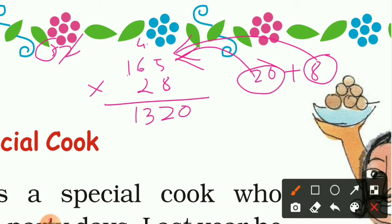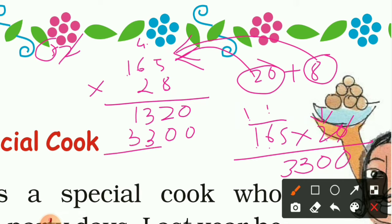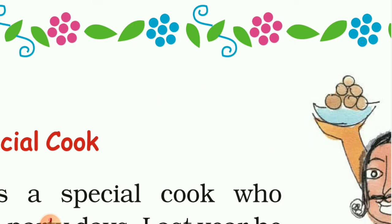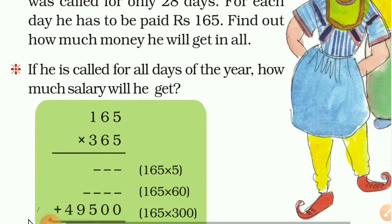Now multiply 165 by 20. Put a 0 at the end, then multiply all digits by 2. 2 × 5 = 10, carry 1; 2 × 6 = 12 plus 1 = 13, write 3 carry 1; 2 × 1 = 2 plus 1 = 3. So we get 3300. Now add: 0 + 0 = 0, 2 + 0 = 2, 3 + 3 = 6, 3 + 1 = 4. So 4620 rupees will be paid to Shantaram for 28 days of work.